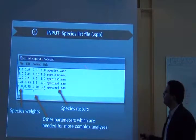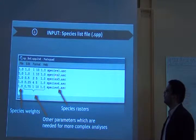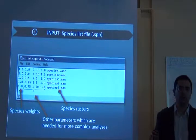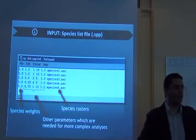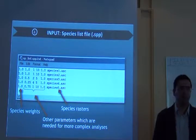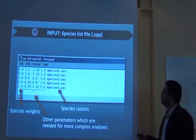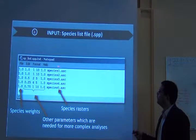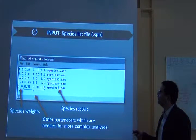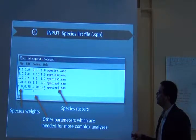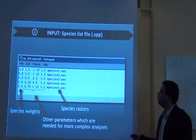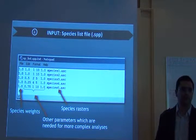And then you have the name of the raster files. This is the basic mandatory file number two. So you need to have all the rasters, one raster for each species. And you need to have this species list file that tells zonation where are the files containing the features, the distribution of the features, and what are the parameters of your analysis, and what is the weight of these species.